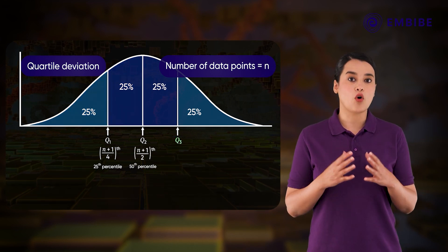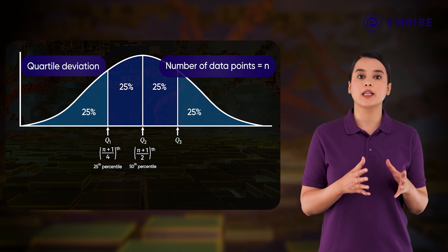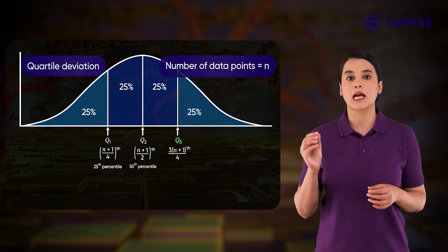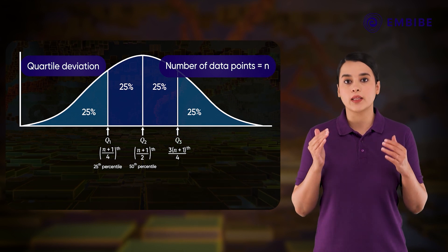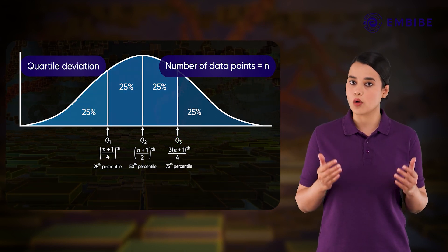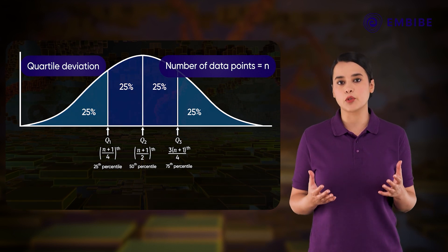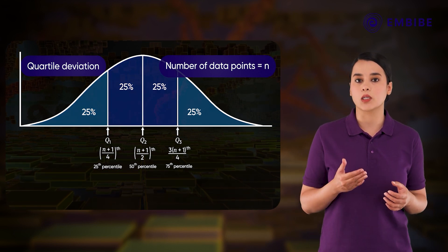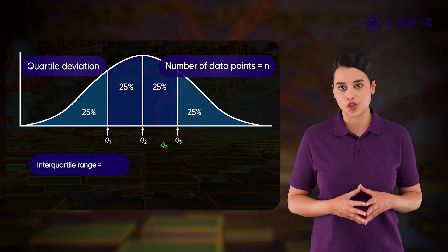The third or upper quartile Q3 is the data point that comes at the 3(n+1)/4th position when the data is arranged in ascending or descending order. The difference between the upper quartile and the lower quartile is called the interquartile range.